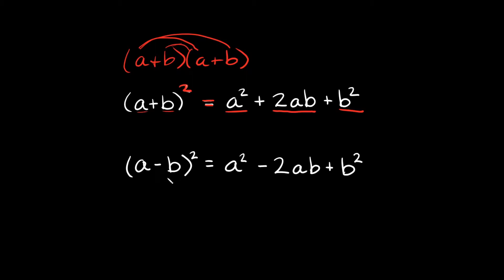The subtraction one basically works the same way. So if you're subtracting two terms and you're squaring them, that's going to be equal to the first term squared, then the last term squared, and the only difference is we're going to subtract two times a and b multiplied together. But the addition sign at the end is still the same as with the addition version.